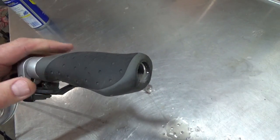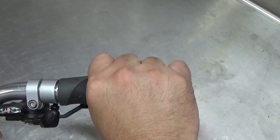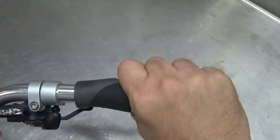Remove the screwdriver and give the grip a twisting motion. It should slide right off the handlebars.